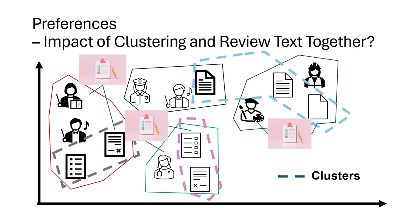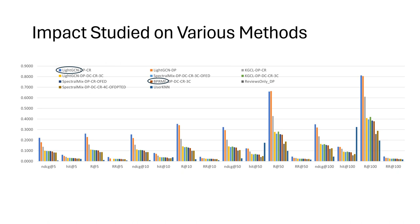We also wanted to study the combination of the two on recommendation systems. To see the impact of clustering and review text embedding in general, we selected representative methods such as GCN, BPRMF, KGCL, and some others.